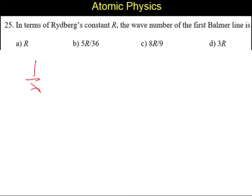the relation connecting wavelength and Rydberg's constant is 1 by lambda equals R times (1 by N1 square minus 1 by N2 square). Here, it is Balmer line.